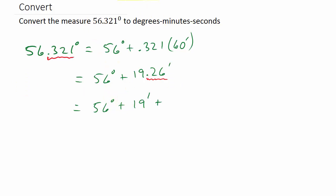That's going to be 0.26. Now remember, we're going from minutes to seconds, so that's times 60 seconds. Minutes to seconds is times 60, so that's 56 degrees, 19 minutes.